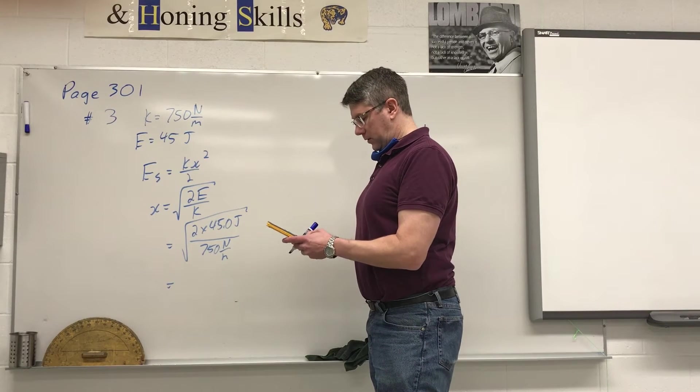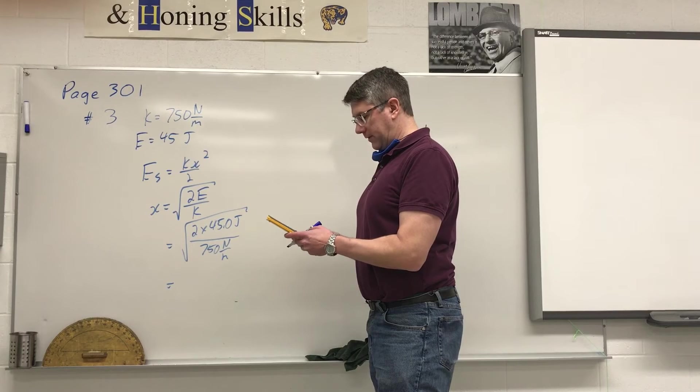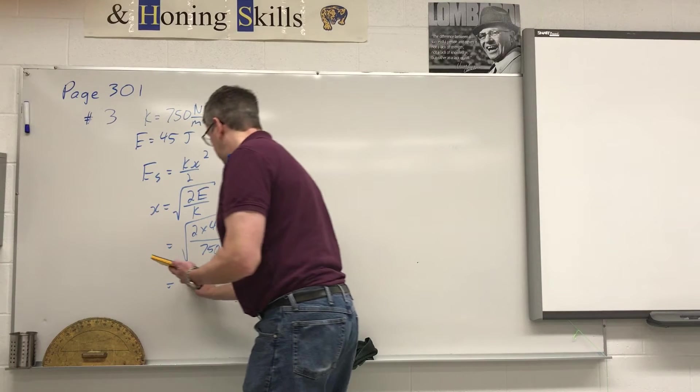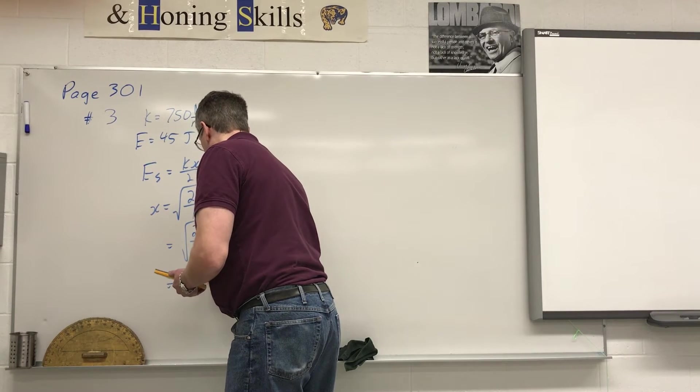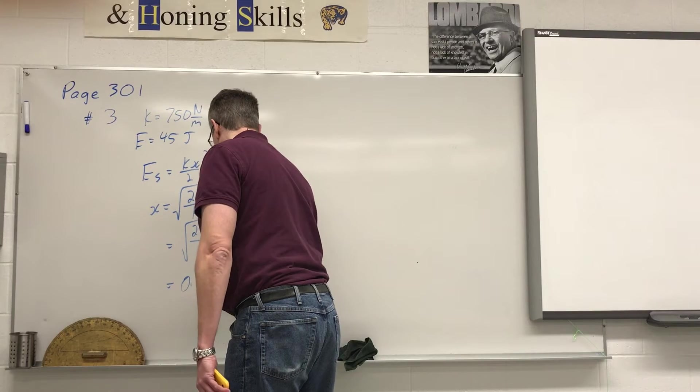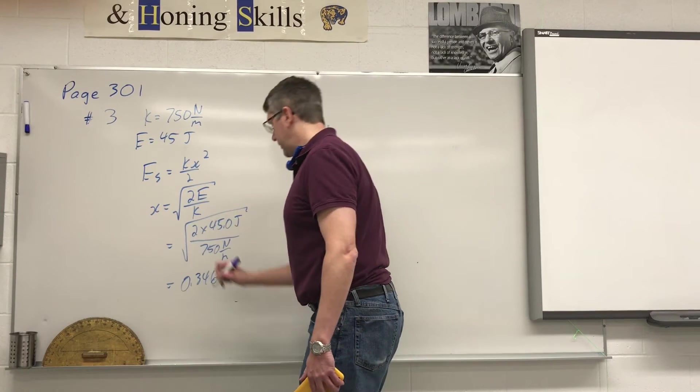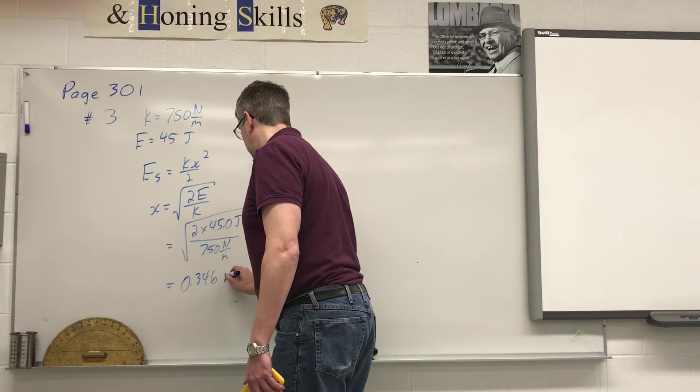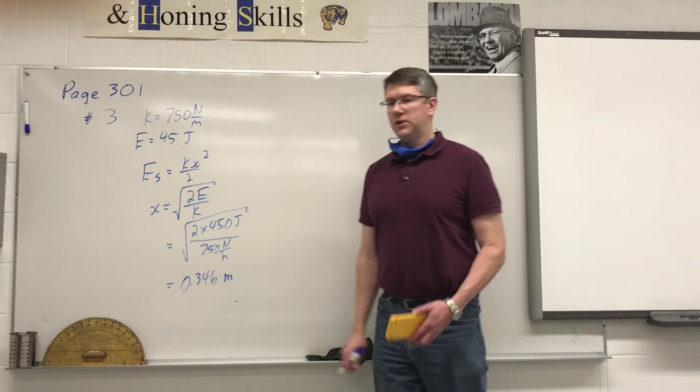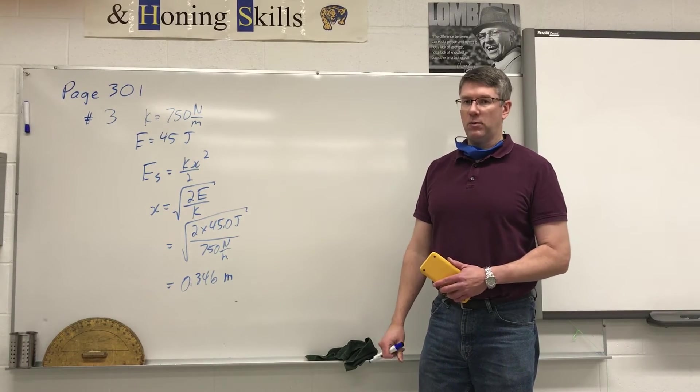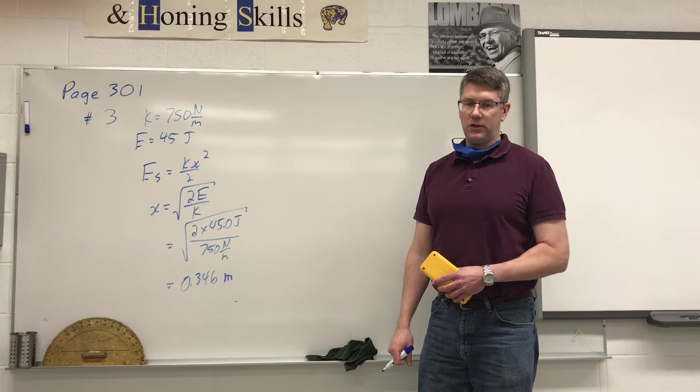Square root 2 times 45 divided by 750 gives me 0.346 joules—sorry, not joules. We are looking for distance, meters as the amount of stretch. So when it's stretched 34.6 centimeters is when it has 45 joules of energy stored in it.